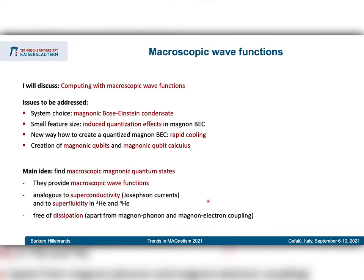The main idea of my presentation is to find macroscopic magnonic quantum states. These quantum states provide the macroscopic wave functions which we need. These wave functions can interfere and are non-linear because we are working in a magnonic system where the Landau-Lifshitz equation is already non-linear. These macroscopic wave functions are analogous to what you might know from superconductivity, such as Josephson currents, and from superfluidity. Especially interesting is that these states can be made free of dissipation, as they are excitation states of the condensates. The condensates themselves always decay into the phononic system with a finite lifetime.